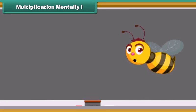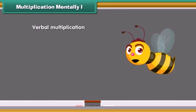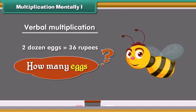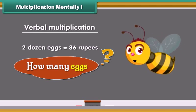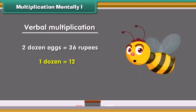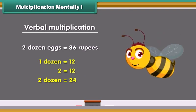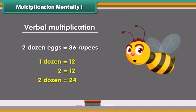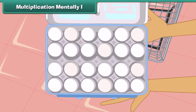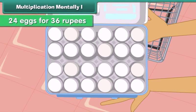Let us look at some examples of verbal multiplication. Jennifer buys 2 dozens of eggs for 36 rupees. How many eggs did she buy? We know 1 dozen equals 12. Therefore, 2 dozen will be equal to 24. Thus, Jennifer bought 24 eggs for 36 rupees.